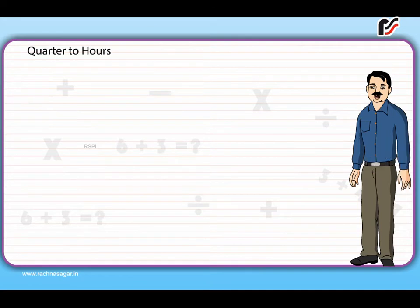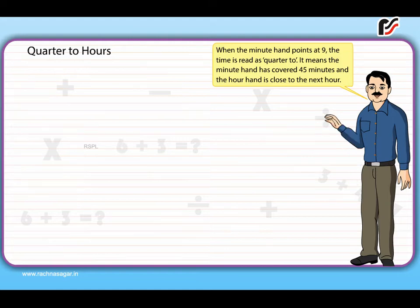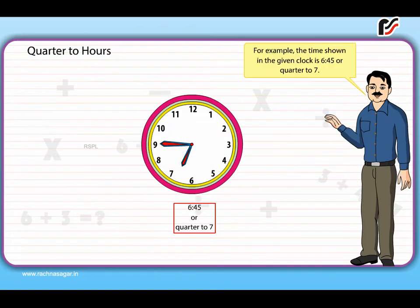Quarter to hours: When the minute hand points at 9, the time is read as 'quarter to.' It means the minute hand has covered 45 minutes and the hour hand is close to the next hour. For example, the time shown in the given clock is 6:45, or quarter to 7.